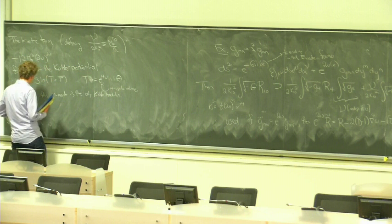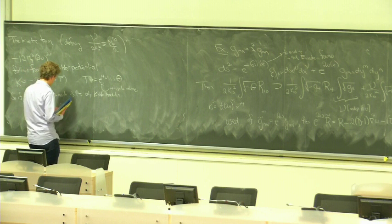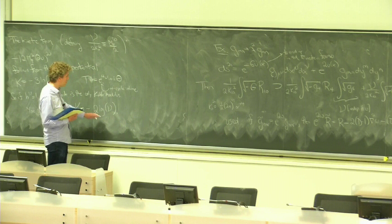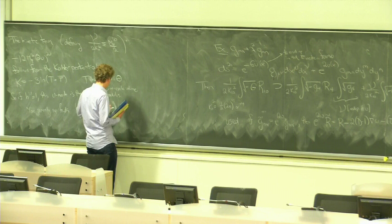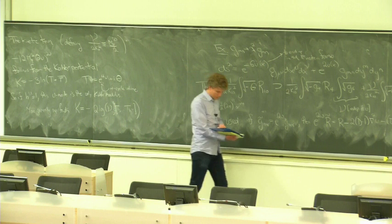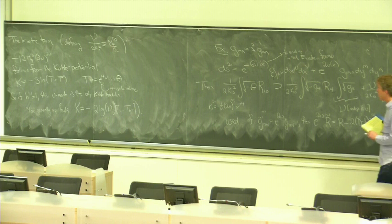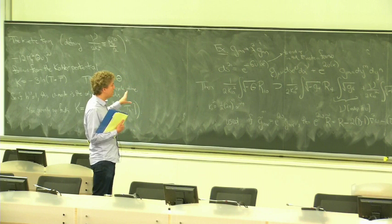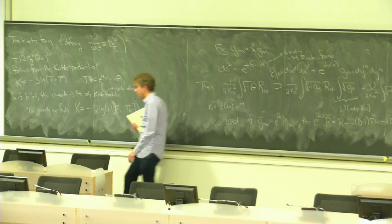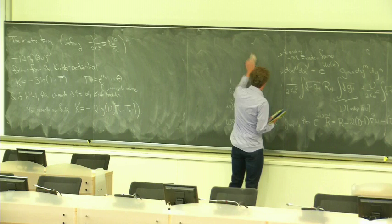If H^{1,1} = 1, this u mode is the only Kähler modulus, and we've succeeded in directly deriving the Kähler potential for the metric on moduli space of deformations of the Kähler form — just by writing down an ansatz, dimensionally reducing the Einstein-Hilbert term, and seeing what came out. This connects the definitions of moduli as fields arising from the gravitational sector with gravitational-strength couplings to what we did in dimensional reduction of Calabi-Yau compactifications.